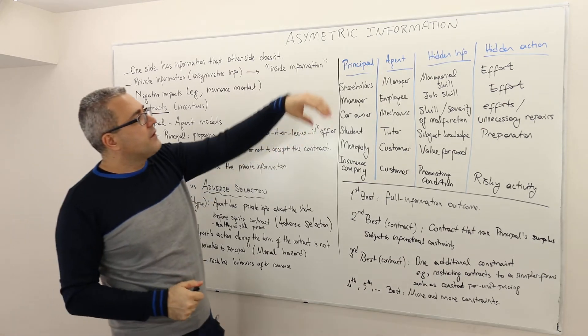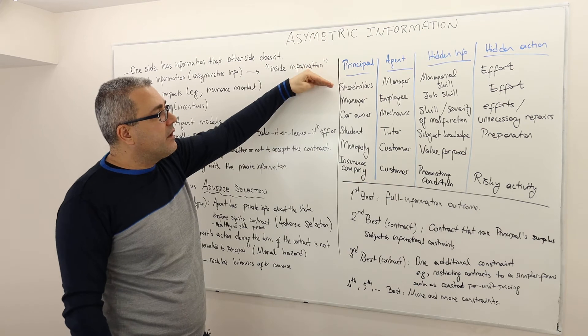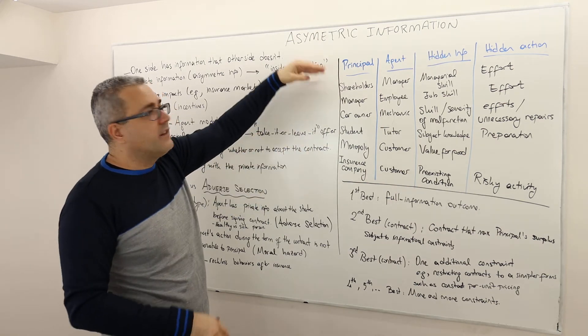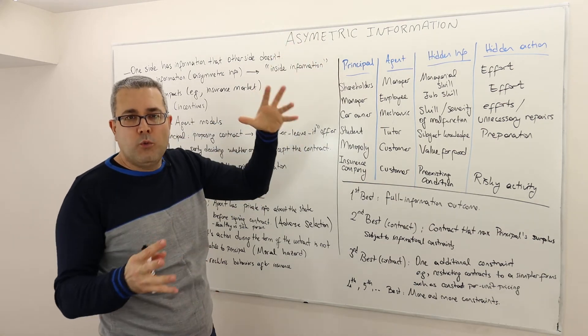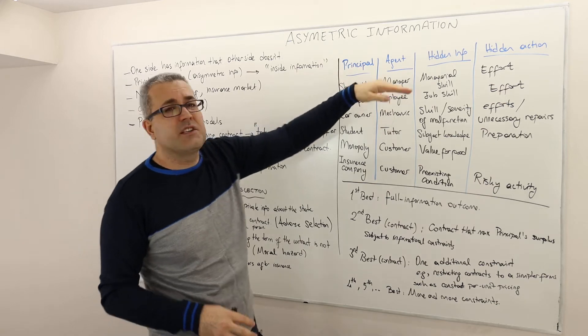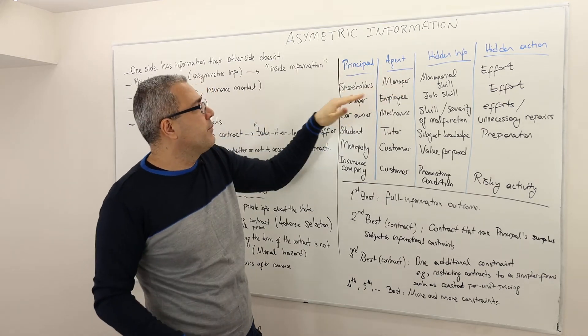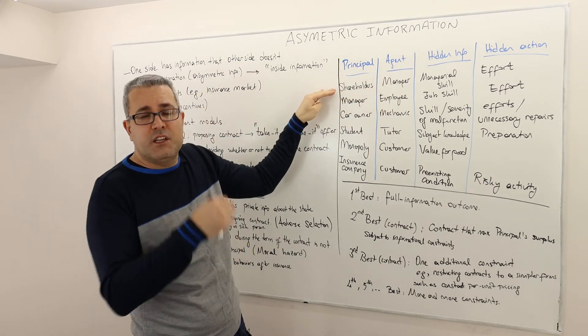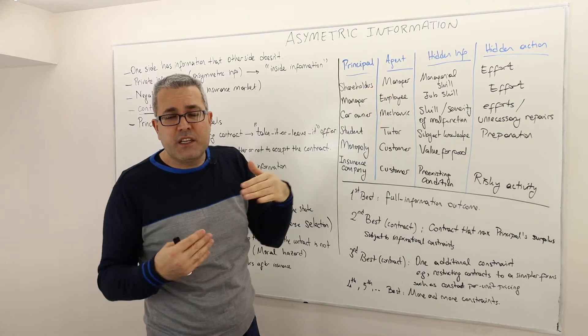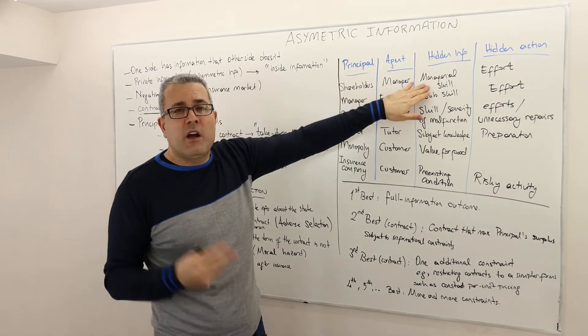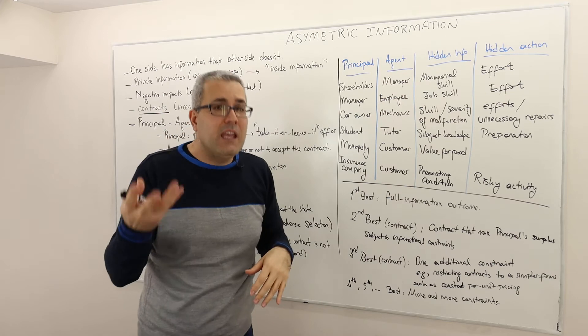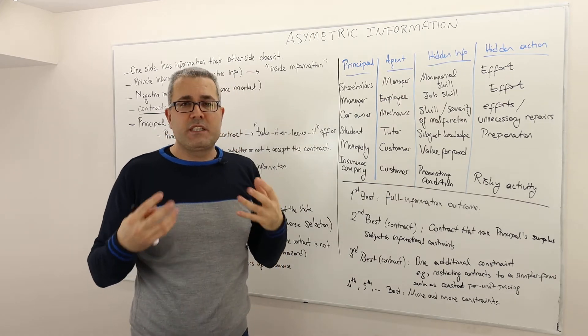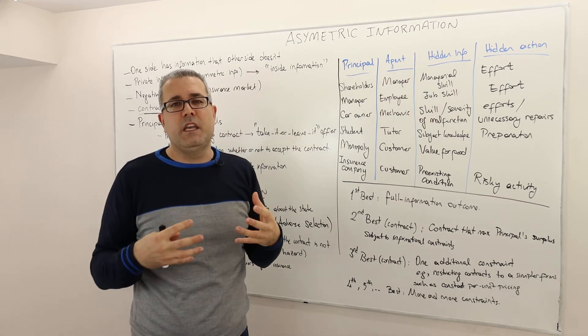A few examples. Consider a firm and their shareholders who own part of the firm, and there's a manager, CEO for example. So principal is the shareholders, agent is the manager. And here, the hidden information may be managerial skill, right? How skillful the CEO is. Well that's probably a private information.